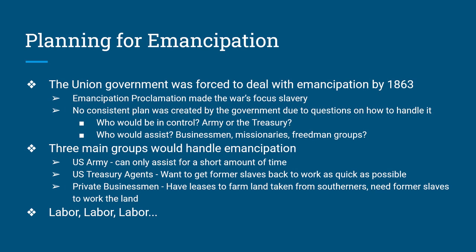The three main groups each had limitations. The U.S. Army was only equipped to help for a short time because it's not their job to take care of all the former slaves — they're there to wage war and take territory. Basically they would give you a hot meal, maybe a cot, and continue on their way. U.S. Treasury agents, dealing with money, wanted to get former slaves back to work as quickly as possible. Then there were private businessmen looking to make profit — trying to get land from former southern slave owners and finding employees to work it, with former slaves becoming their labor source.